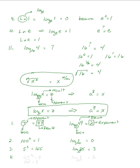Let's do 64 to the one half equals 8. Write down log; the base 64 goes as a subscript, the exponent one half goes on the right-hand side of the equals, and the result 8 goes inside the log. Remember, the half power means square root, so the square root of 64 is 8.